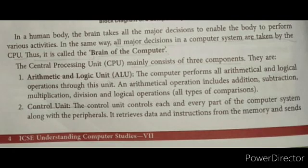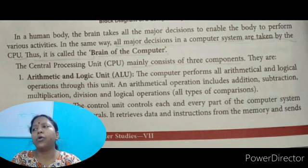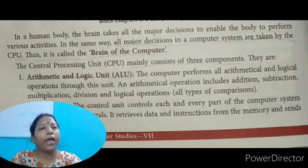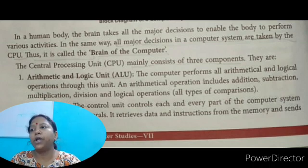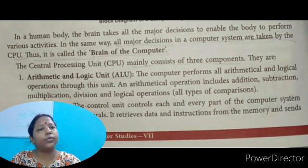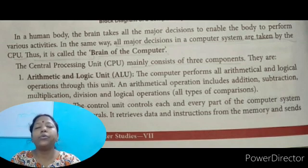In the human body, the brain takes all the major decisions to enable the body to perform various activities. In the same way, all major decisions in the computer system are taken by the CPU — thus it is called the brain of the computer. Just as our brain controls our body, the CPU controls all components of the computer system and takes all decisions.